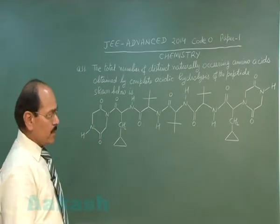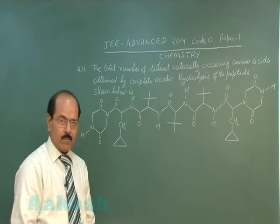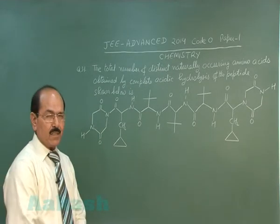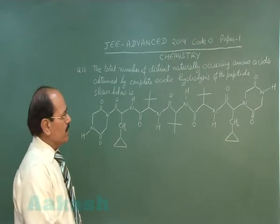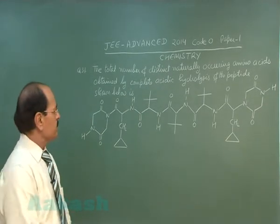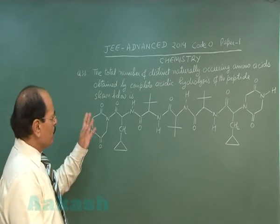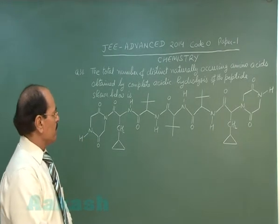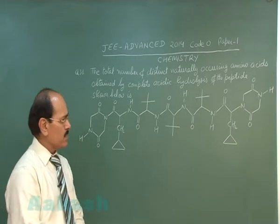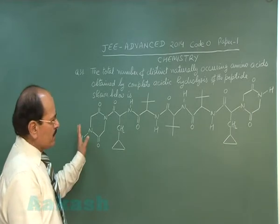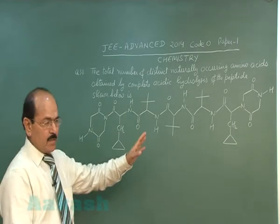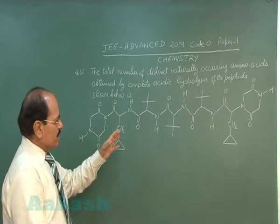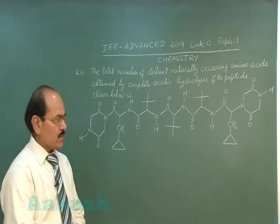Question number 31 reads: the total number of distinct naturally occurring amino acids obtained by complete acidic hydrolysis of the peptide shown below is. This is the structure of the peptide shown, and it is subjected to acidic hydrolysis.